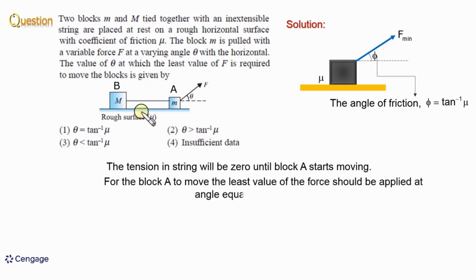That means θ should equal the angle of friction. We know these two blocks are connected with the light inextensible string. When one moves, the other also moves. They're connected together, so they will always move together.